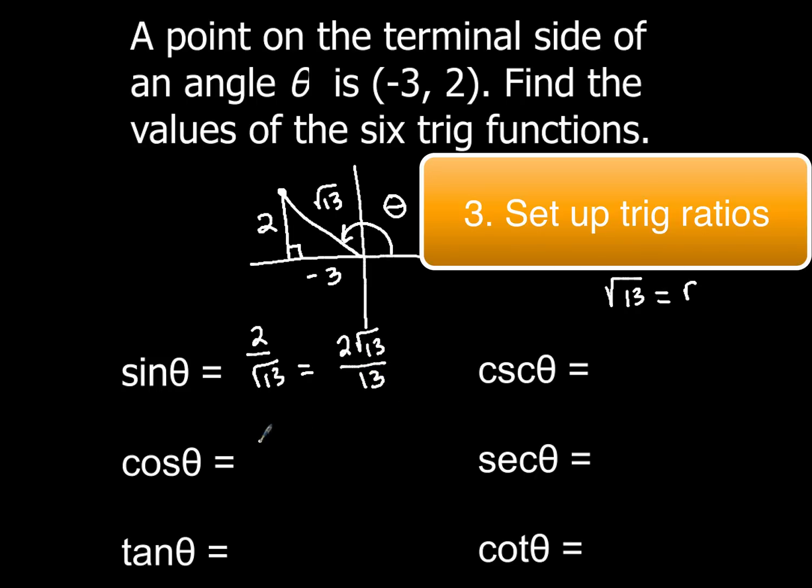For cosine, you'll have -3/√13 because that's adjacent over hypotenuse. And then again, you're going to have to rationalize that. You'll have -3√13/13. And then last but not least, we'll have our tangent, which is simply -2/3. And the negative doesn't matter if it goes up with the 2 or down with the 3.